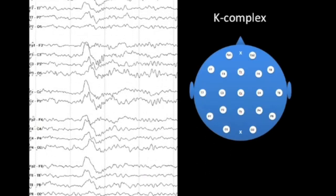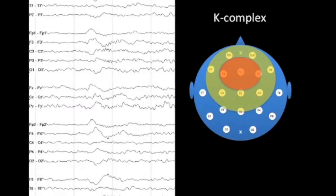The Laplacian montage has limitations, especially with broadly distributed electrical discharges. For example, a normal K-complex during sleep has a very broad field extending throughout much of the anterior head. Because the Laplacian montage compares one electrode only to its closest neighbors, in a very broad electrical field there may not be much difference between adjacent electrodes. When we switch to the Laplacian montage for this K-complex, things flatten out and it becomes very difficult to see. In summary, Laplacian montages are not good for broad electrical fields.